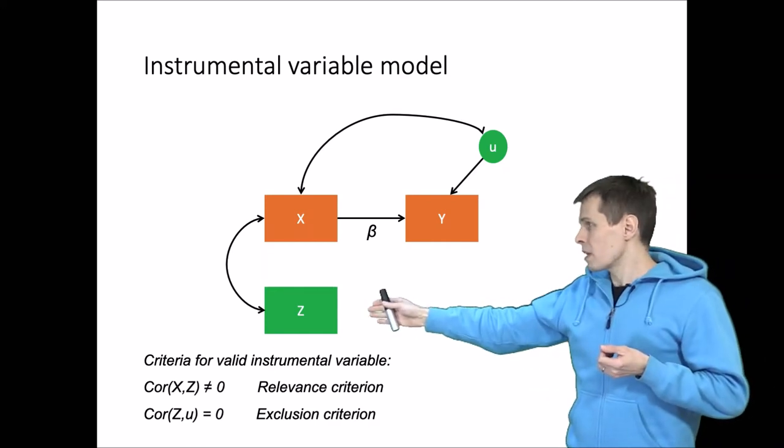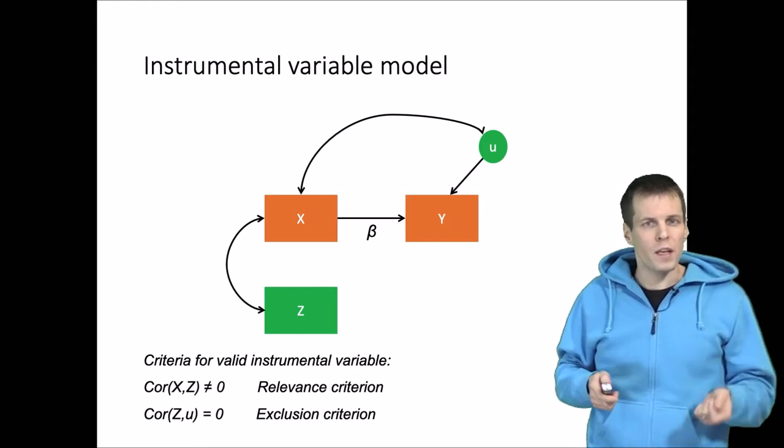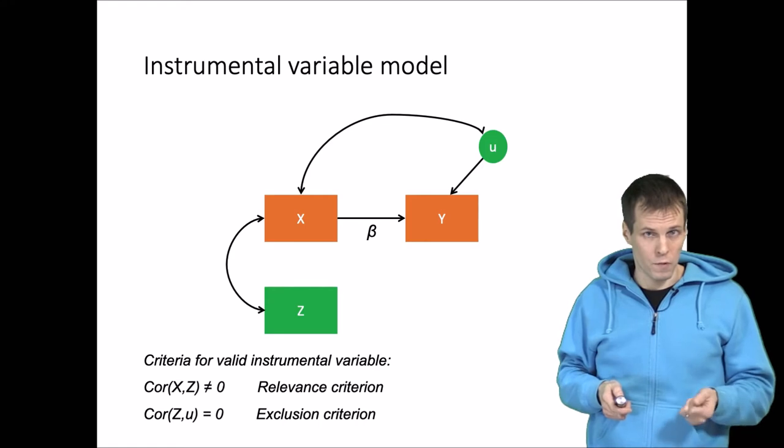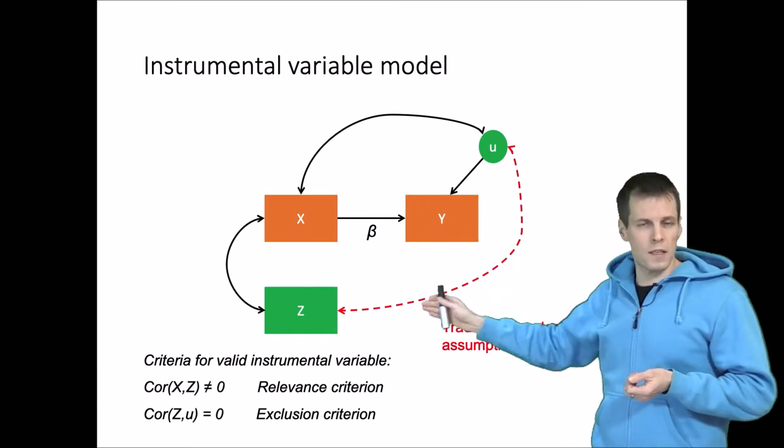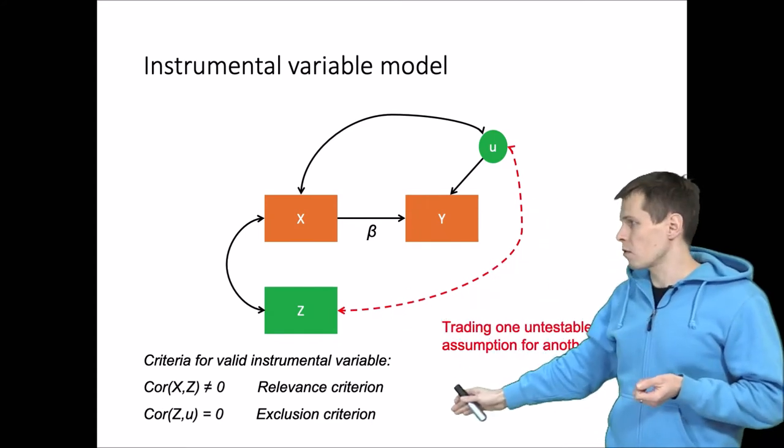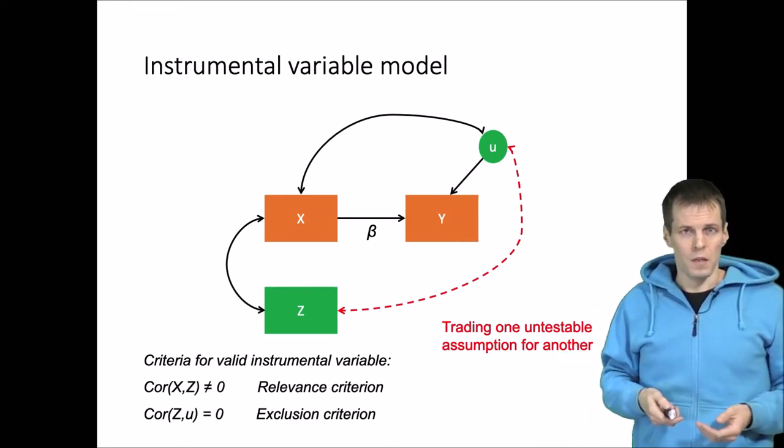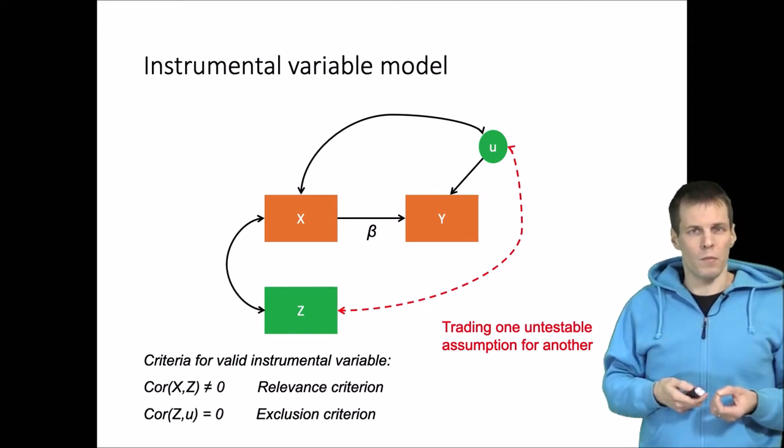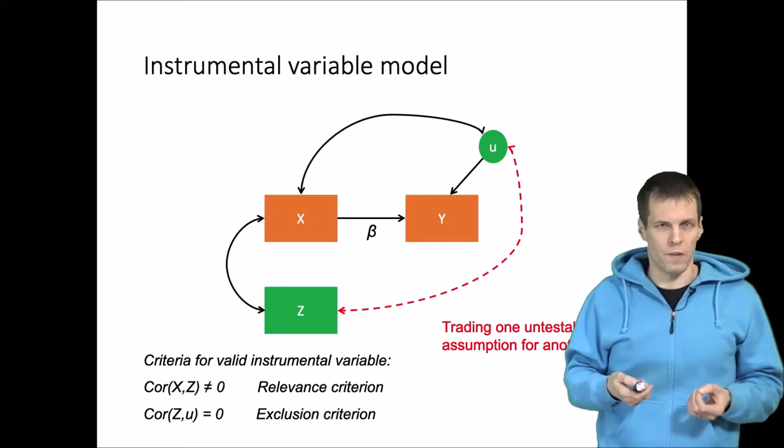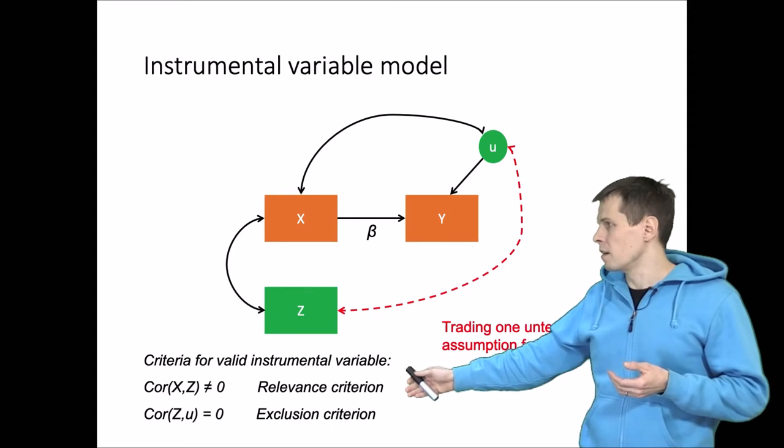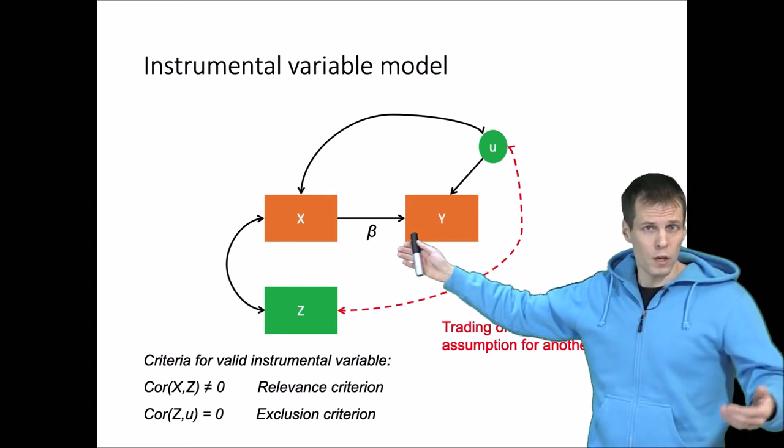If we include this instrumental variable here, what we are actually doing is not necessarily solving the problem, we're just trading one untestable assumption for another. So instead of assuming that U and X are uncorrelated, we are assuming that Z and U are uncorrelated. This is called the exclusion criterion of instrumental variables and it is fundamentally untestable. So when you work with instrumental variables, these two assumptions, the relevance criterion and the exclusion criterion, must be justified, because otherwise this coefficient cannot be assumed to be consistent.